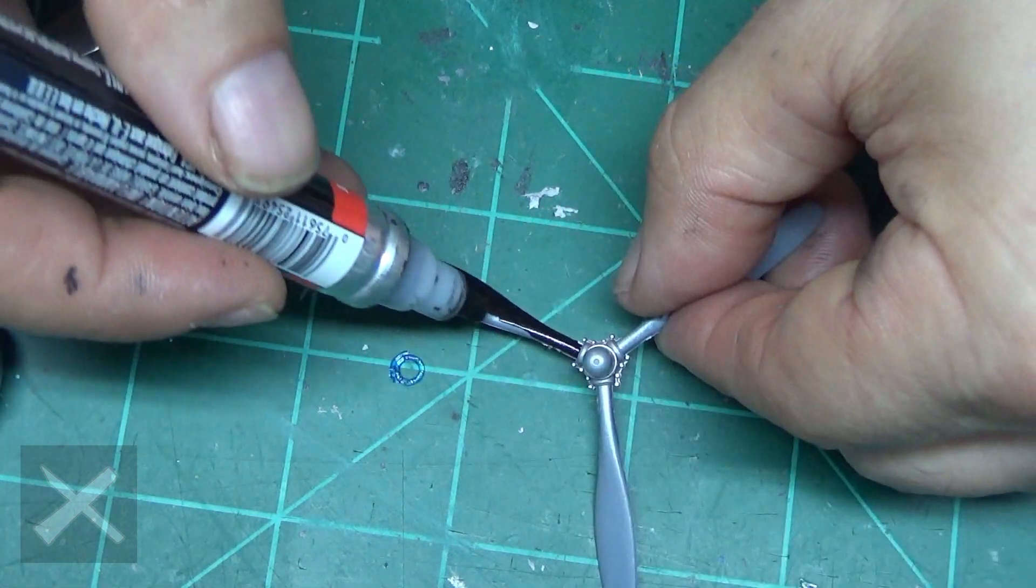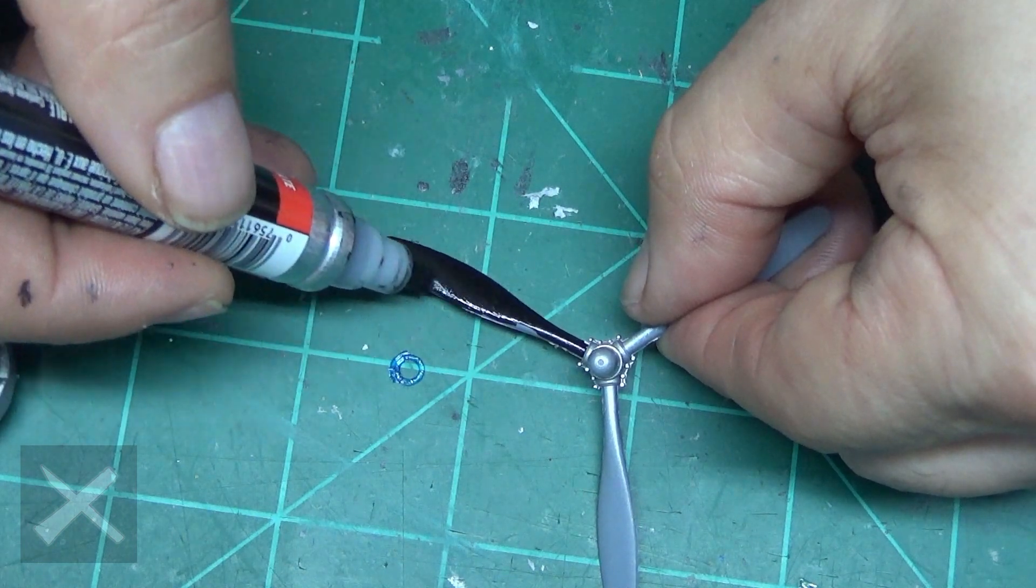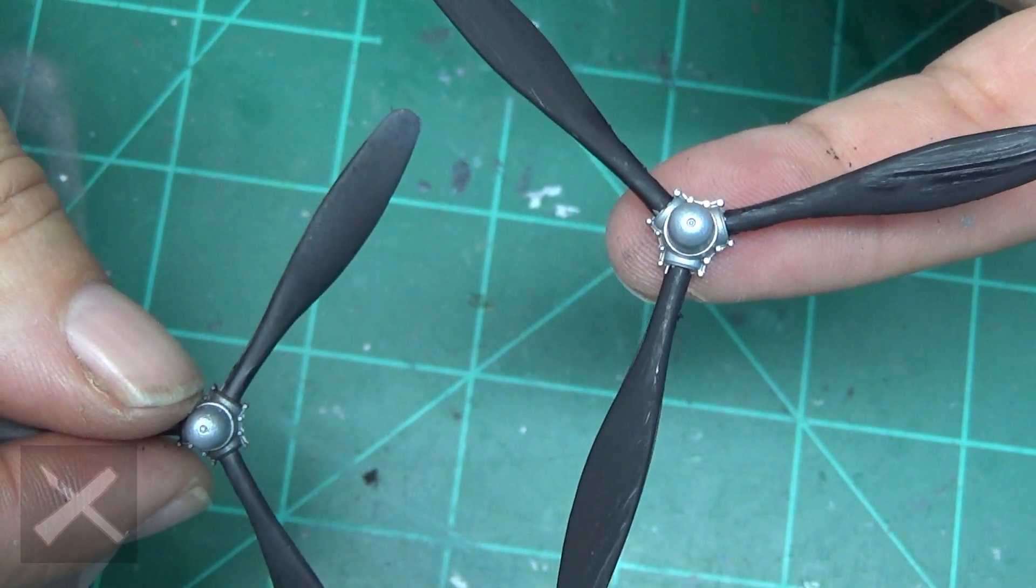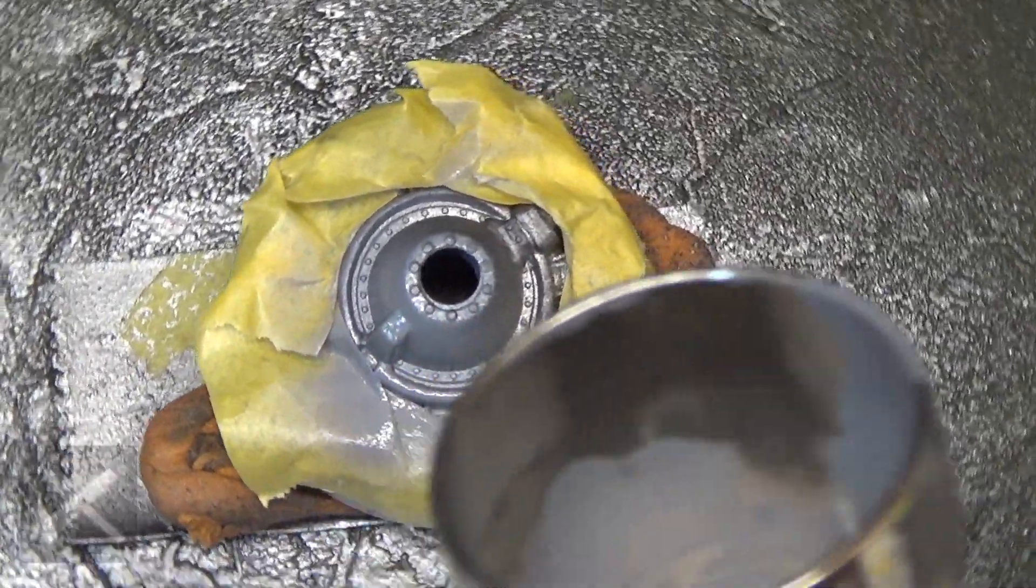You see me doing it with the paint pen. Fairly simple. Just go around each blade, just like this, being careful not to get over everything. And there's the two of them. I mean, they look almost identical.